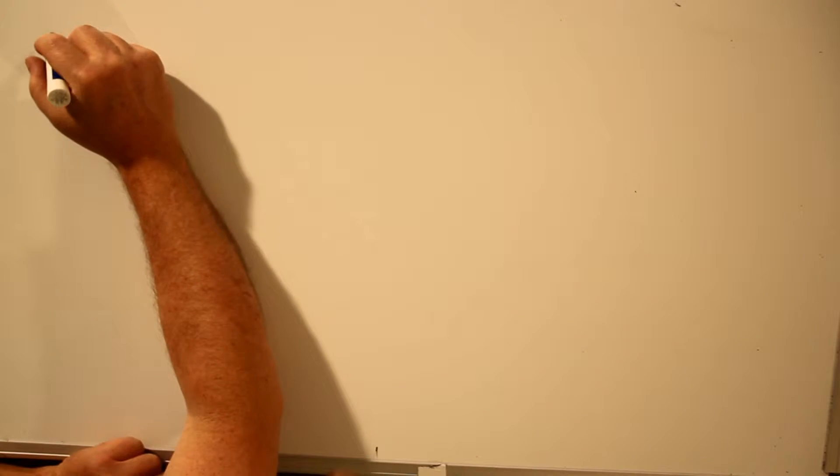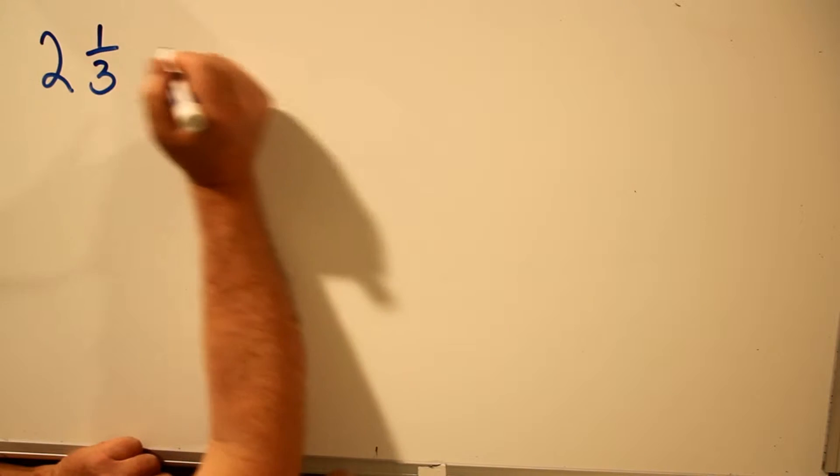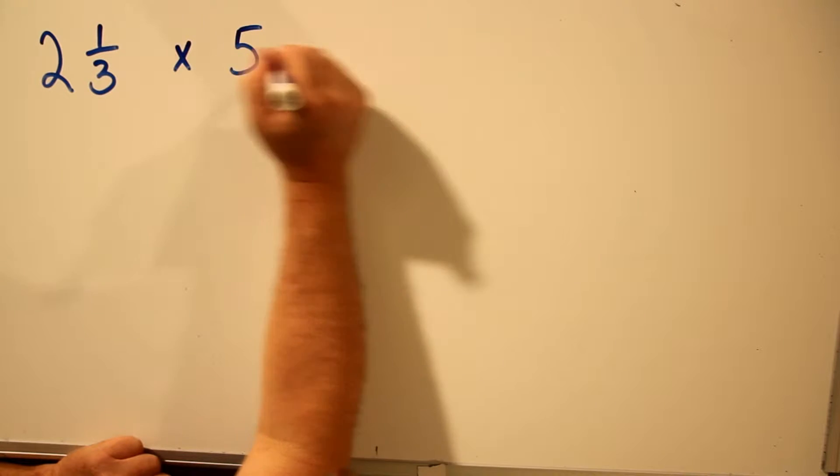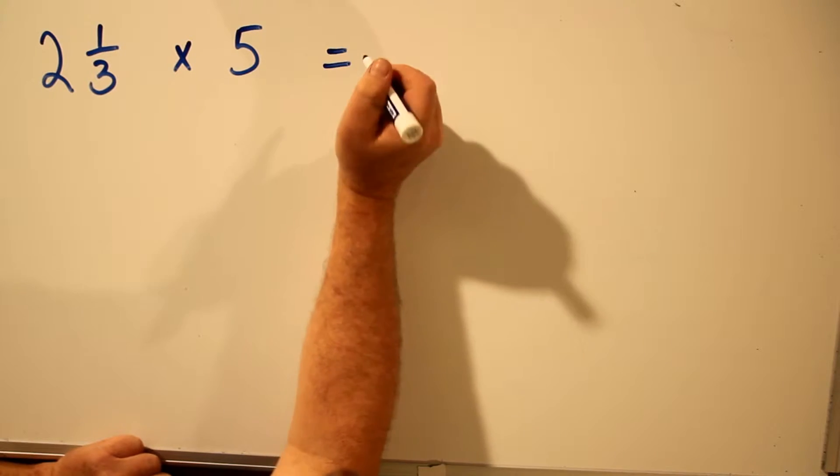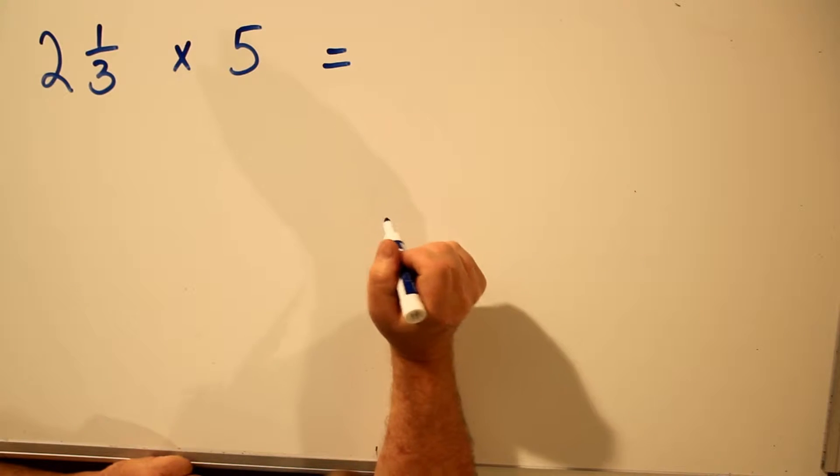I'm going to show you now how to multiply a mixed number. Say you have a number like 2 and 1/3, and you want to multiply it by 5. How do you do that? And the answer is, you first have to convert the mixed number to an improper fraction.